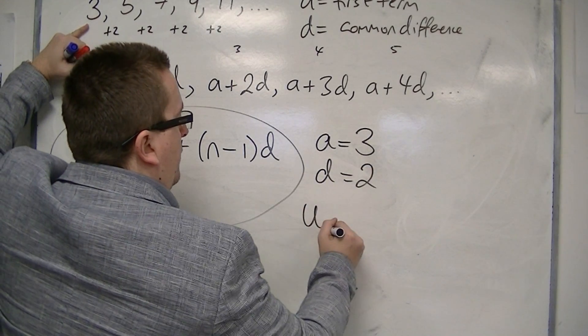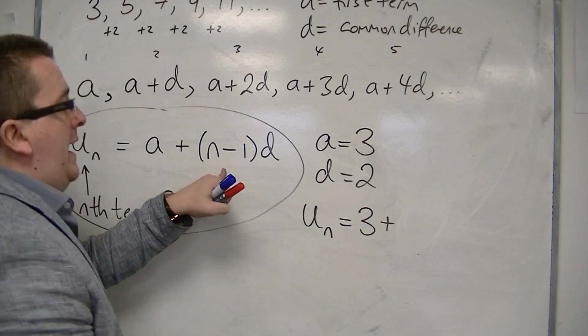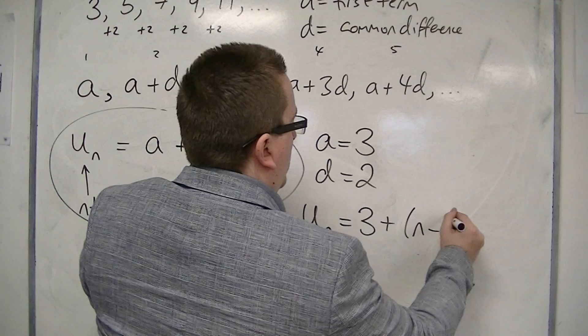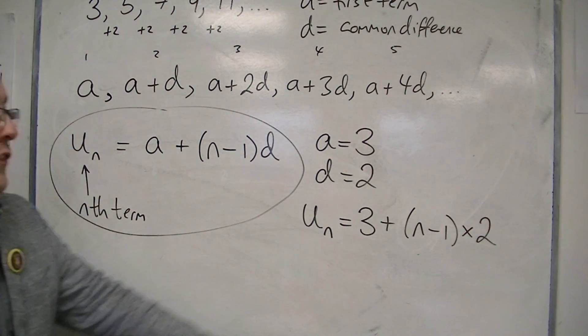then the nth term is 3 plus n minus 1 times 2. And that is the nth term.